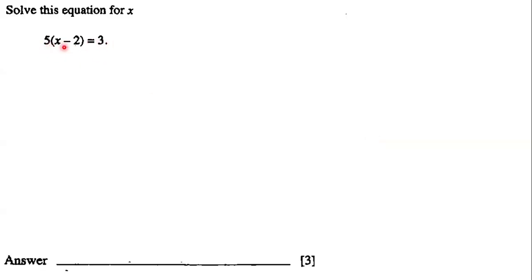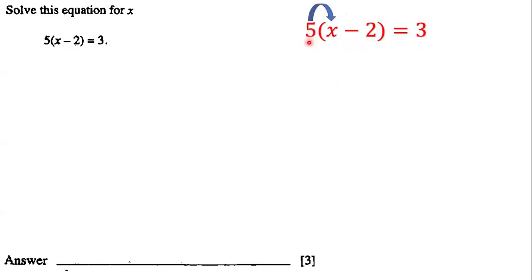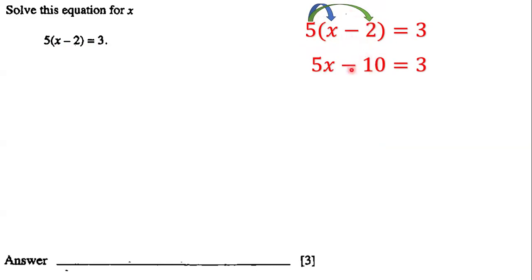Our goal is to solve this linear equation. Notice that we have 5(x - 2) = 3. First, we're going to multiply five by x and then multiply five by two. Five times x is five x, and five times two is ten. We bring down the subtraction sign.